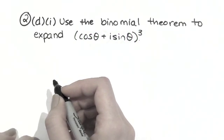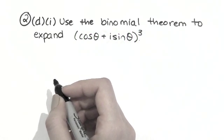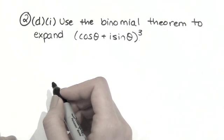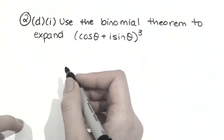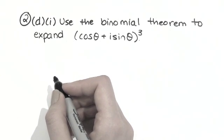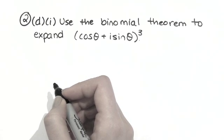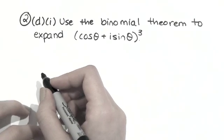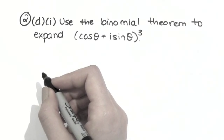Question 2d part 1 of the 2011 Extension 2 exam says to use the binomial theorem to expand cos theta plus i sine theta cubed. The binomial theorem is one of those things that some people really freak out about. It might be because it tends to be taught towards the end of the year, so you don't get as much practice on it.